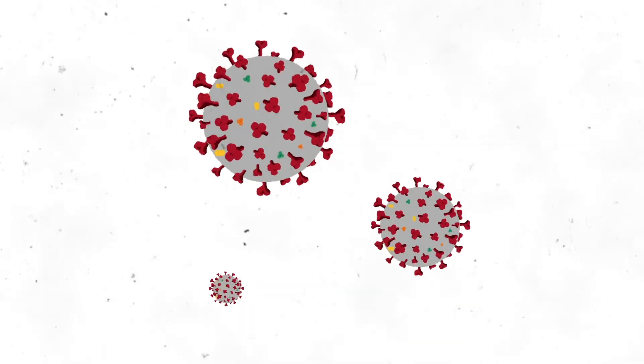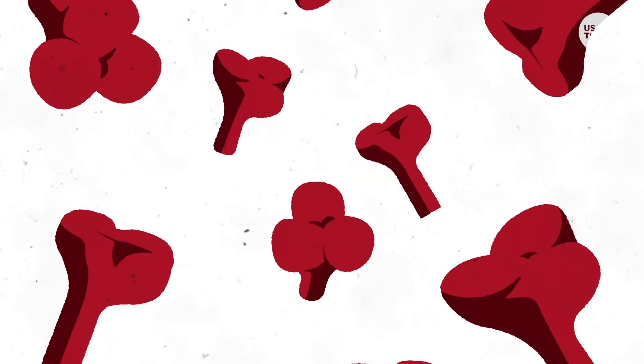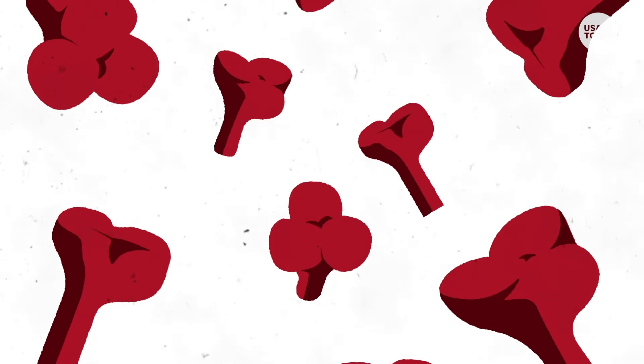Your immune system won't make an actual virus particle, but it will make copies of the angry red spike protein. In other words, no gray ball, but an angry red spike.